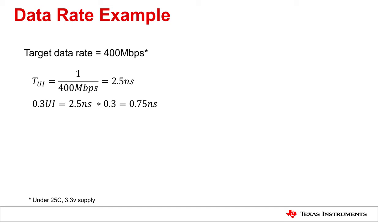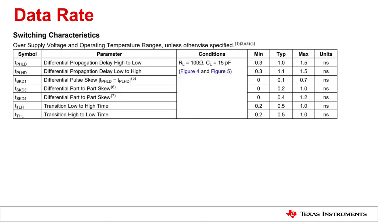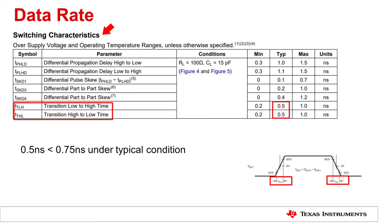Let's take the DS90LV011A as an example. Can DS90LV011A's transition time meet our requirement? Let's look at the datasheet. Typical transition times are listed under switching characteristics. This table is taken from the datasheet. The typical transition time for DS90LV011A is 0.5 nanoseconds, which is less than 0.75 nanoseconds. So DS90LV011A meets our requirement for 400 megabits per second data rates at room temperature.